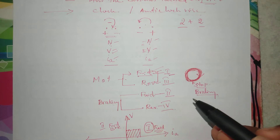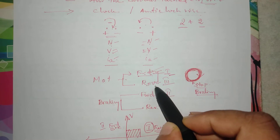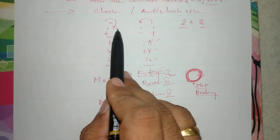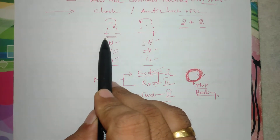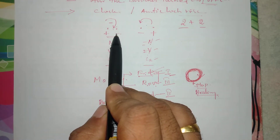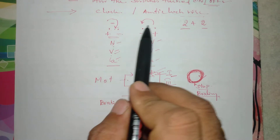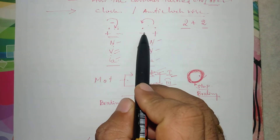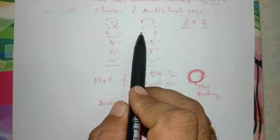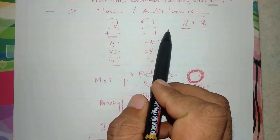For forward motoring, if the machine's terminal is connected with plus with respect to minus, the machine runs in forward (clockwise) direction of rotation. If the terminals are connected minus with respect to plus, the machine runs in anti-clockwise (reverse) direction of rotation.